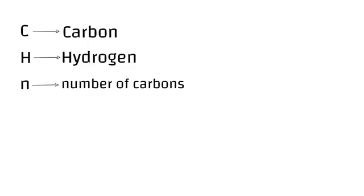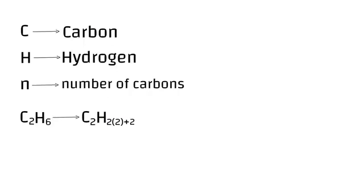Here's a quick example. We have C₂H₆. This could be given to you in multiple choice questions to determine whether it's an alkane, alkene, or alkyne. Check the number of carbons — we have 2. So do 2 times 2, which gives us 4. Then ask yourself how they got to 6 — they added 2. They added that 2 to get to 6, and therefore it's an alkane, according to our formula CₙH₂ₙ₊₂.